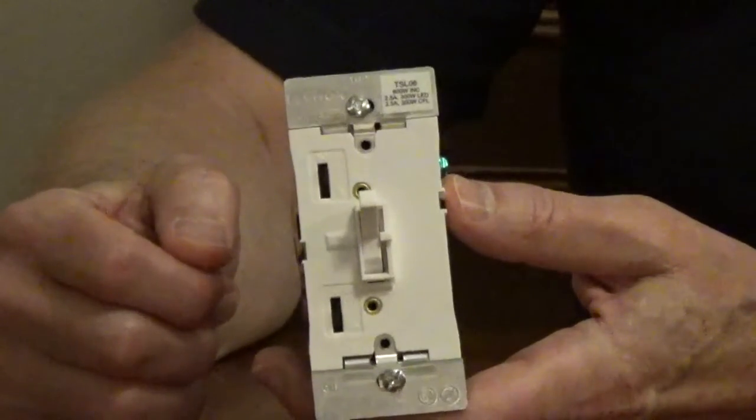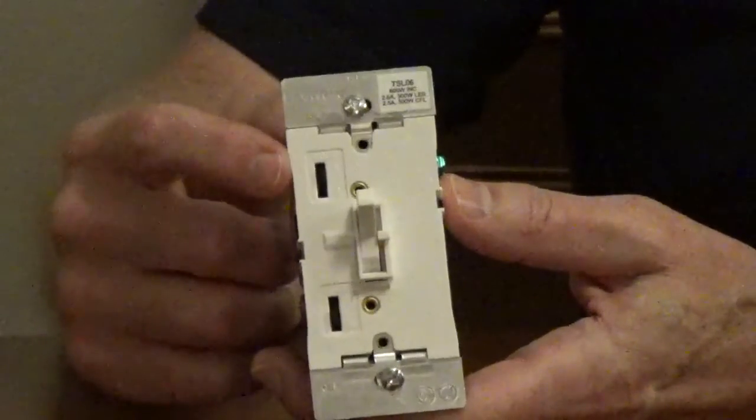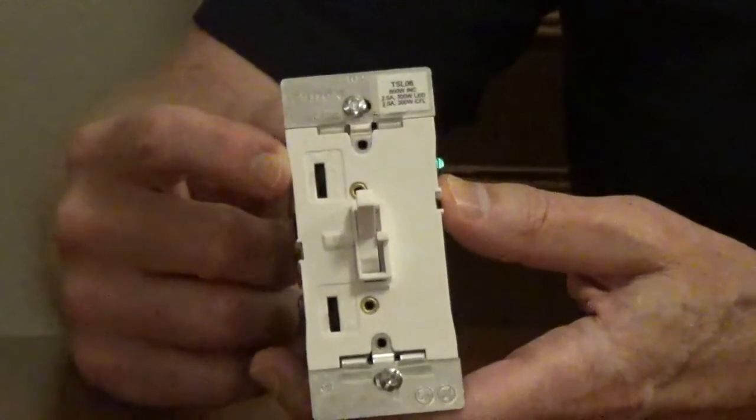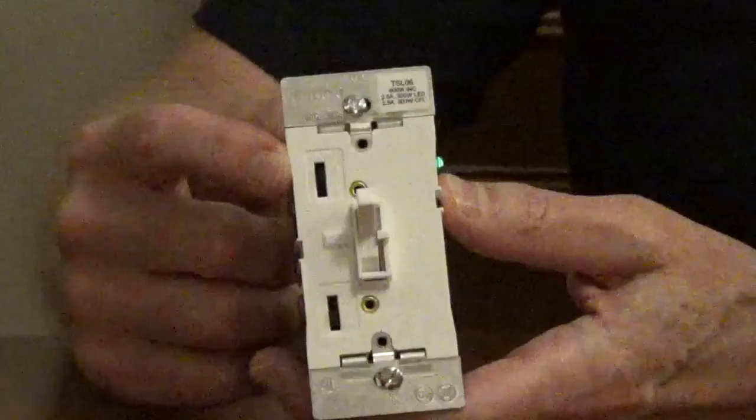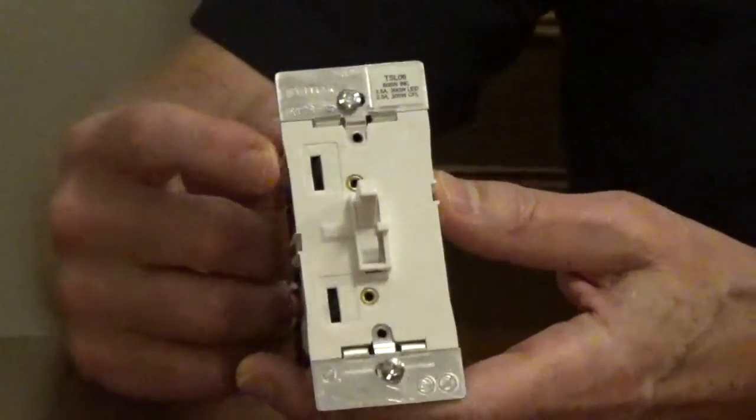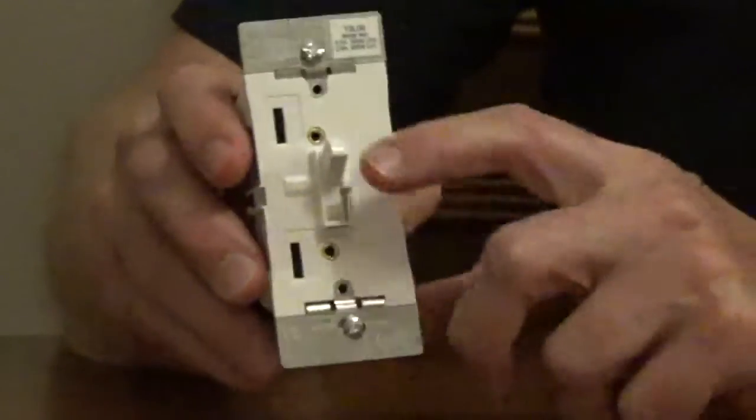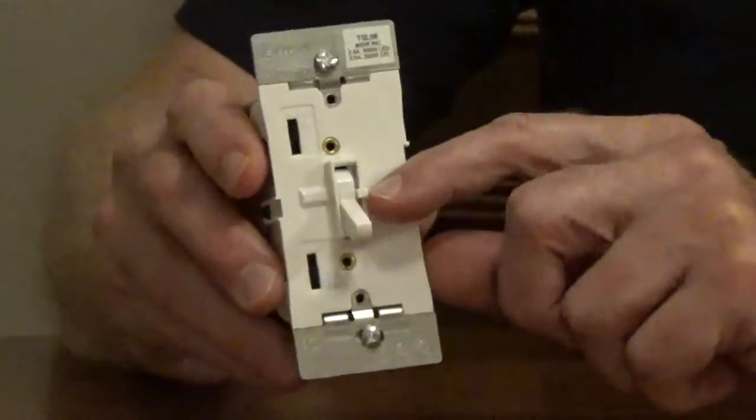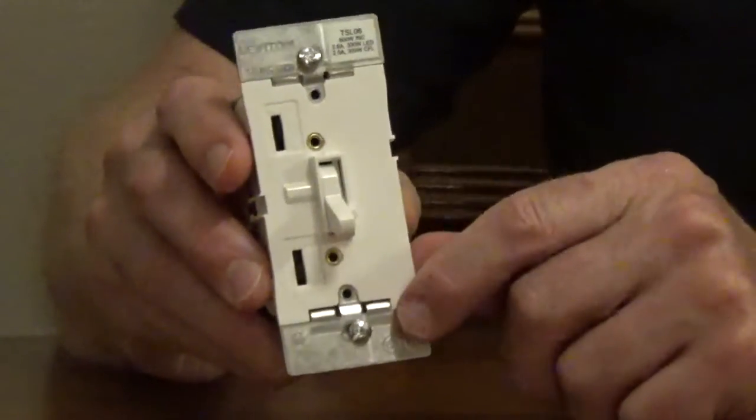This is the TSL-06. It has a switch that's marked Mode, and it has two options, A or B. To set the minimum load level, you're going to have it set on A. You're going to turn the switch off and pull the slide all the way to the lowest setting.